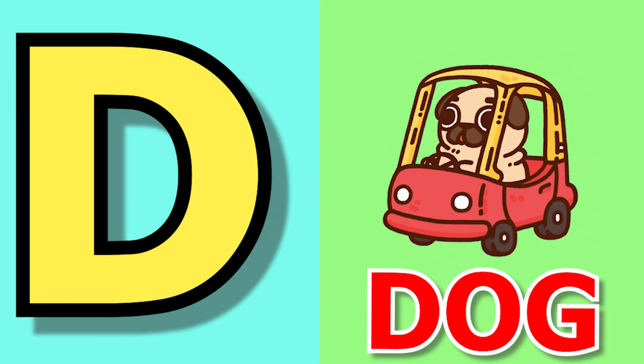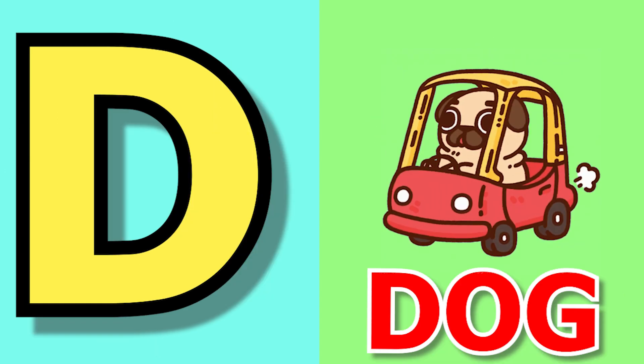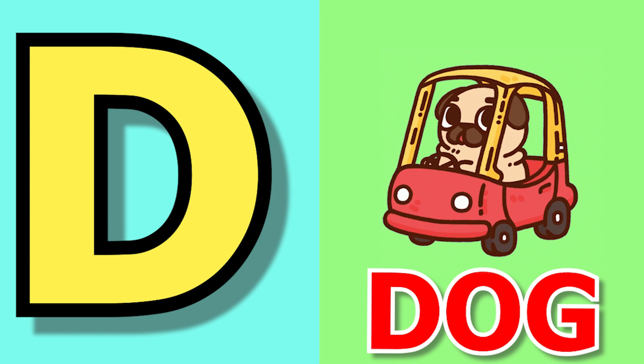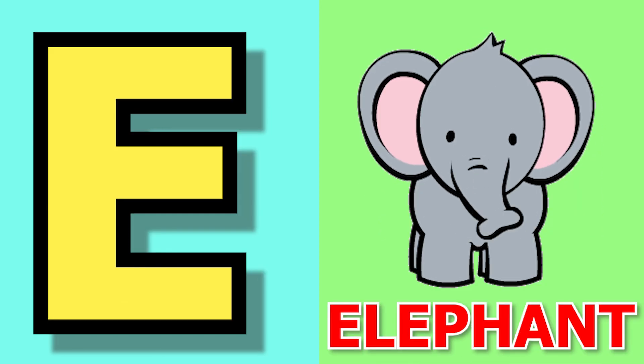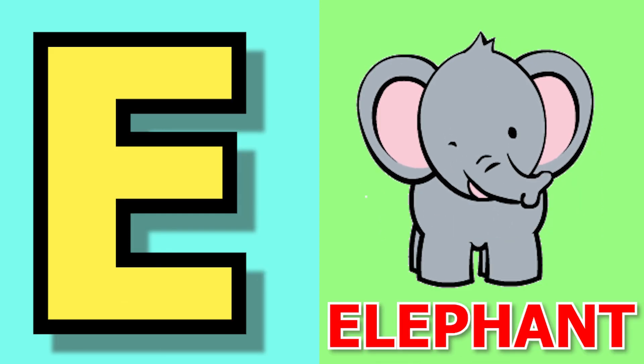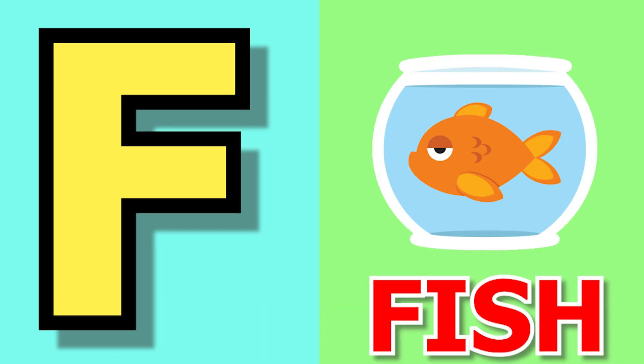D for dog, dog means kutta. E for elephant, elephant means hathi. F for fish, fish means machli.